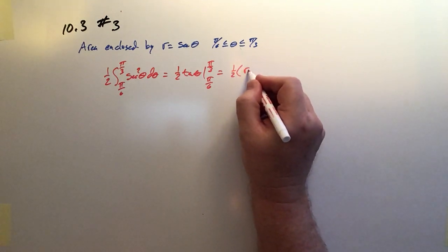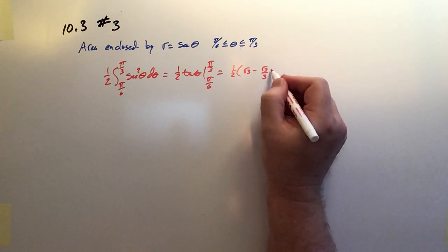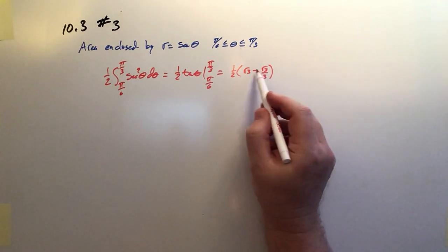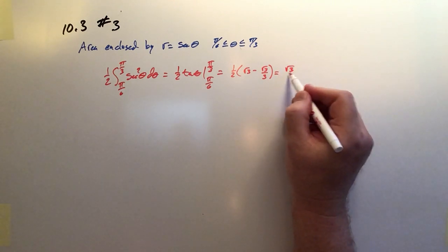So it's one half of radical 3 minus radical 3 over 3. So this is 2 radical 3 over 3 times a half or just radical 3 over 3.